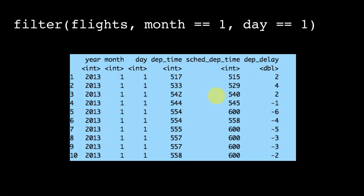So we can say filter flights, month is one, day is one. In other words, we are saying get me only those rows from the flights table for which the month has the value 1 and day has the value 1.